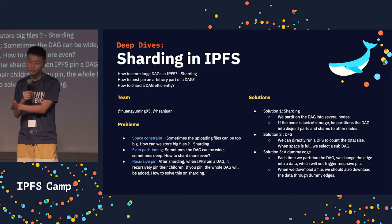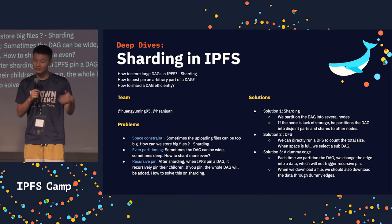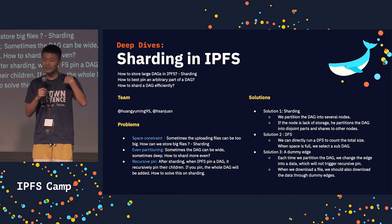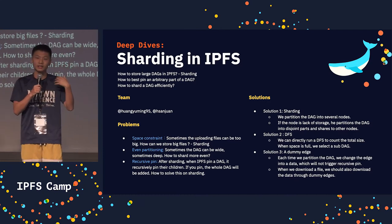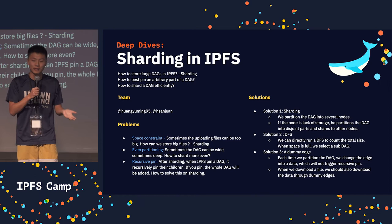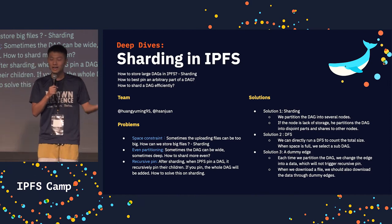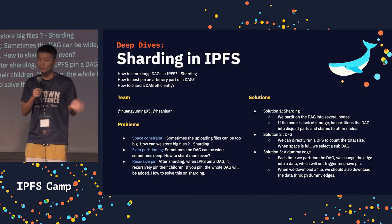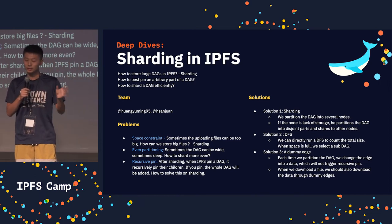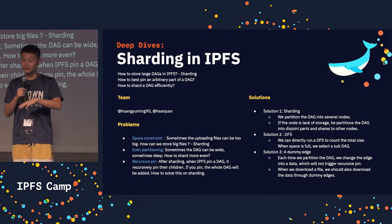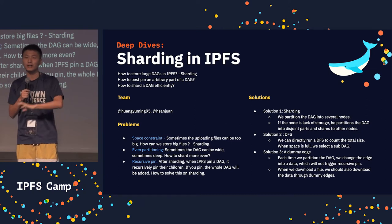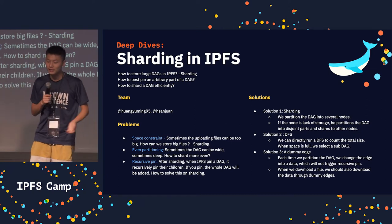If a node lacks sufficient storage and cannot store the whole DAG, it will partition the DAG into several disjoint parts and share the shards to other nodes.